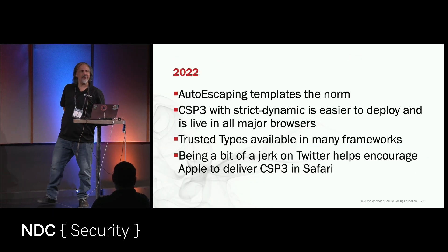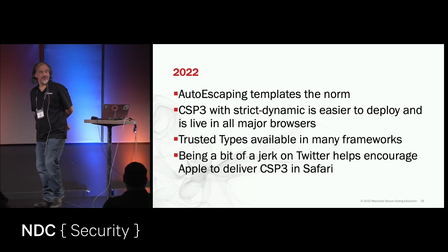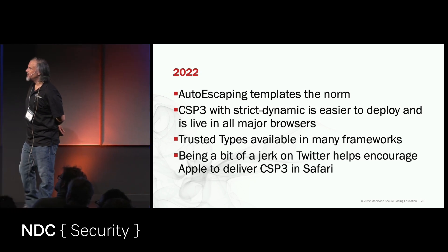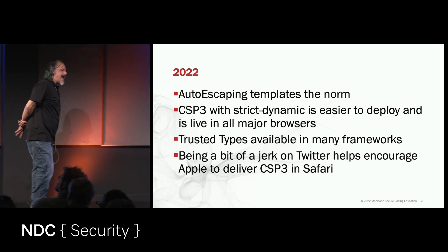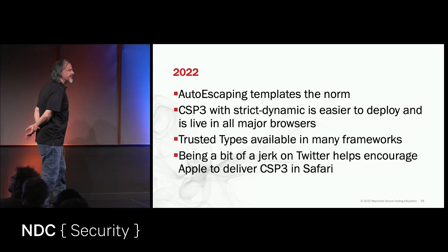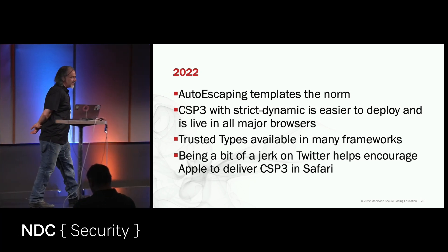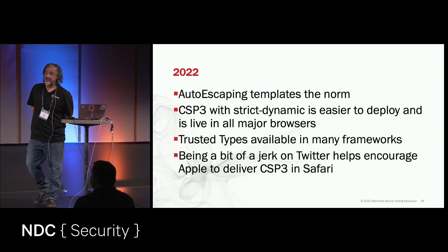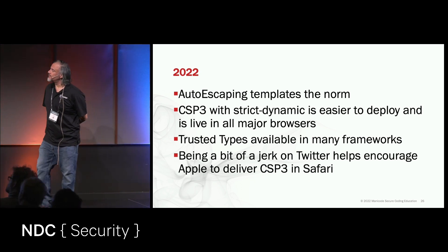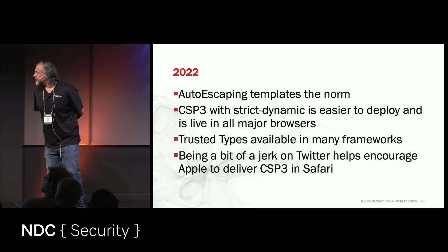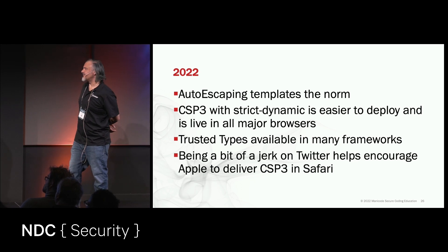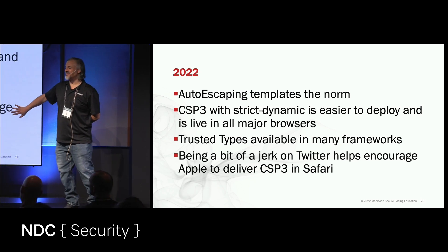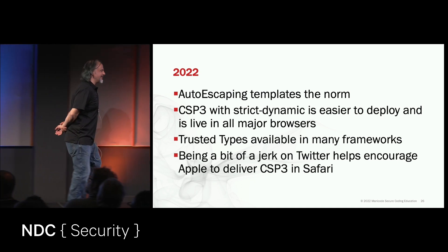Auto-escaping to stop cross-site scripting is the norm in all major frameworks — Vue, React, Angular, Svelte. They all do it. CSP3 with strict-dynamic, just from a few weeks ago, is live in every major browser. Trusted types is available in many frameworks. And being a little bit of a jerk on Twitter can help make the world a more secure place.